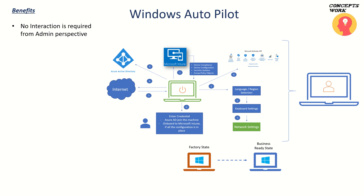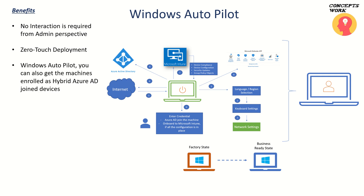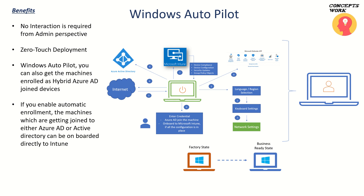Depending on the profiles created and the Intune configuration done for a particular user, respective applications, restrictions, and Group Policy Objects will get deployed to the machine the moment the user signs in. Zero touch deployment means nothing needs to be done from the user's perspective — they just sign in and everything is automated. You can choose whether the user gets admin access or standard user permissions. Autopilot can also onboard machines as Hybrid Azure AD joined devices, after which Intune onboards them to endpoint protection.